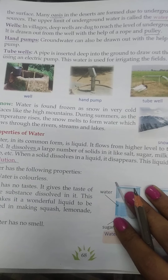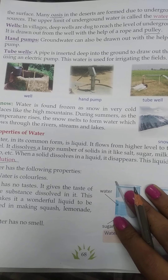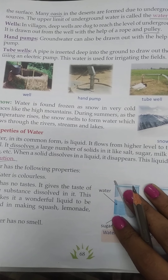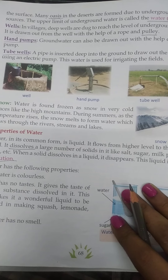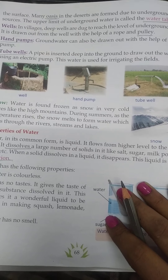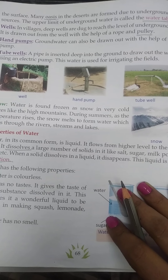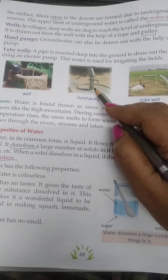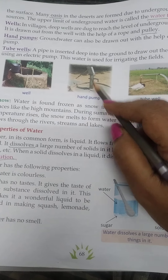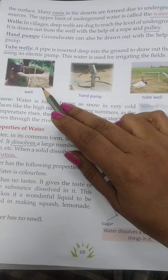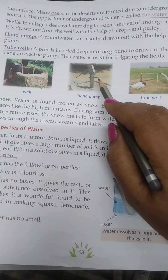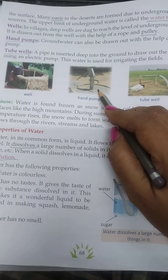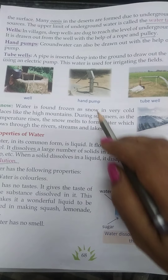Next is hand pumps. Ground water can also be drawn out with the help of a hand pump. You can see in the picture — this picture shows a well and this picture is related to a hand pump.